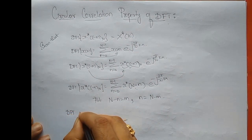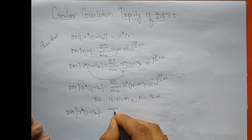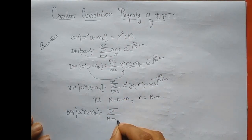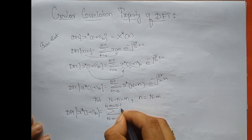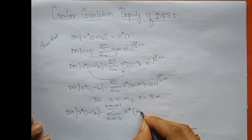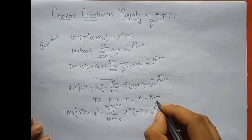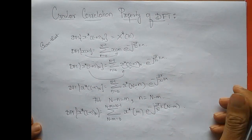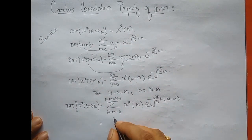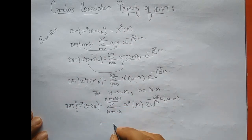So DFT of x star of minus n mod N equals summation where n minus m goes from 0 to N minus 1. So x star of m times e to the power minus j 2π/N times k times (N minus m). Writing in terms of m, the N on the right-hand side and the N in the denominator cancel out.